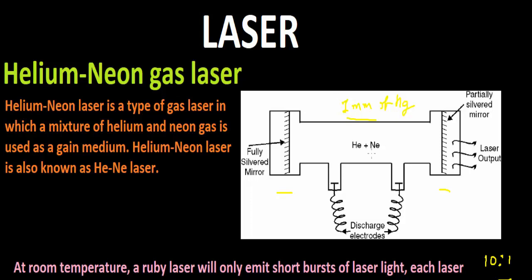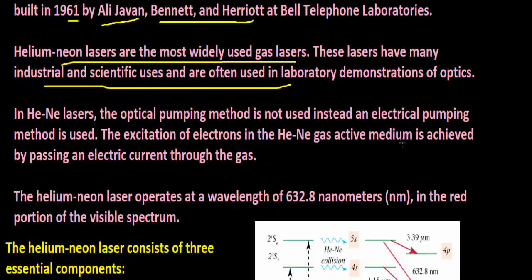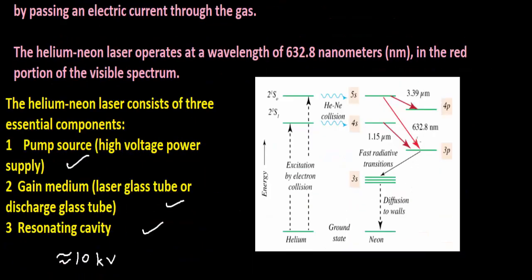Since helium is second in the periodic table, it is very light and neon is much heavier than helium, so helium will move randomly much more than neon. As a result, some of the helium atoms are raised to one of the metastable states, that is 2s1 and 2s3. You can see excitation by electron collision - helium goes to this state or it can go to this state.